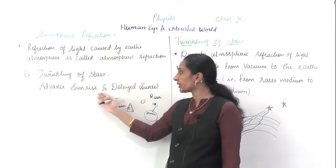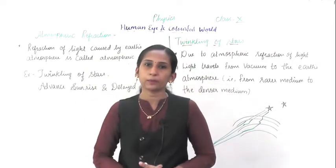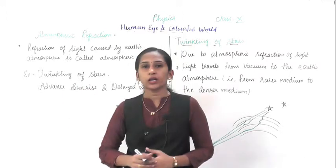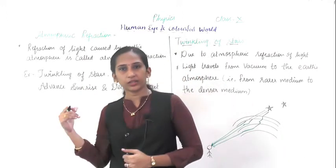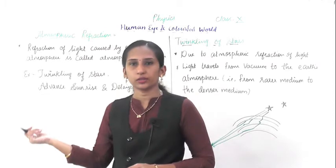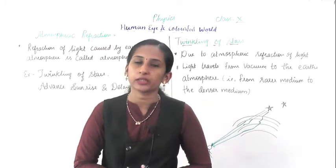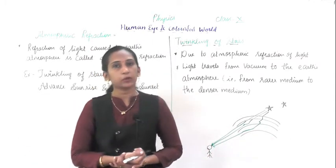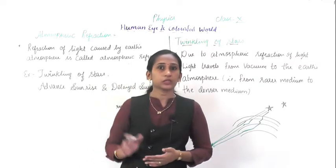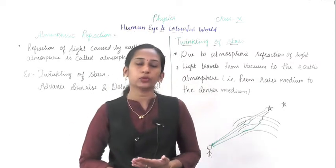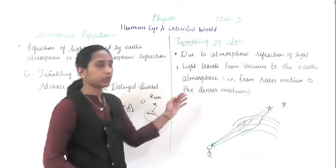The second example is advanced sunrise and delayed sunset. These are also examples of atmospheric refraction. All these are daily life examples, but the reason behind them you will study in this lesson. This portion is very important as it is not deleted - it is there for your exam, so you have to do it properly. Listen carefully.